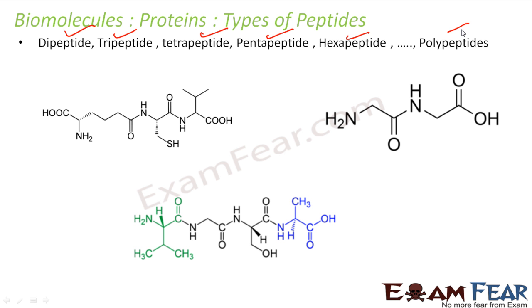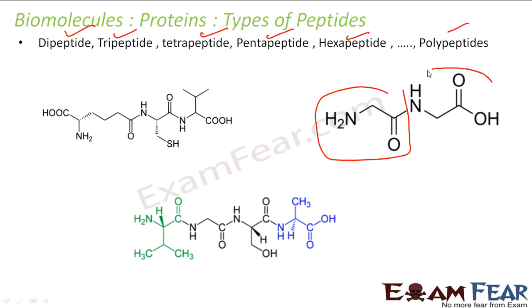Dipeptide means a molecule containing two amino acids joined by a single peptide bond. Here, this is one amino acid and this is another — they are joined by a single peptide bond, which is a dipeptide.